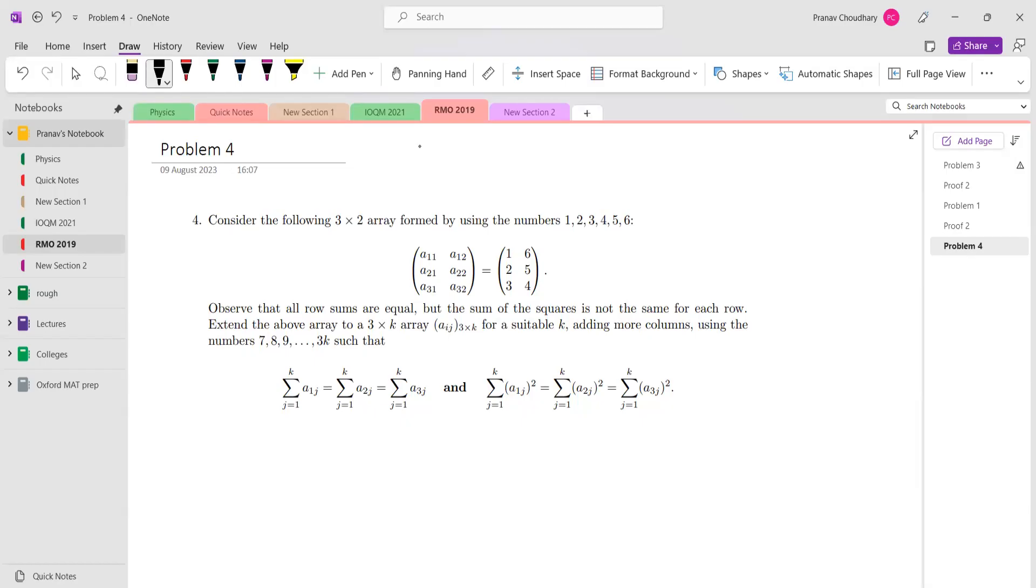Hi everyone, today we'll be discussing RMO 2019 Problem 4. This is the problem statement. I'll not go over it word by word, but I'll quickly tell what it means. You're given a 3×2 array: 1, 2, 3, 4, 5, 6.